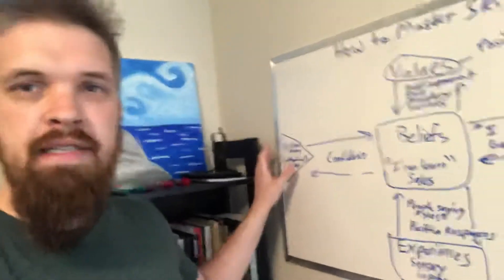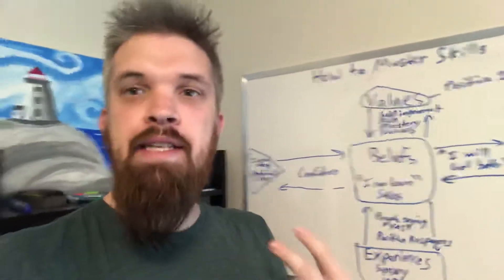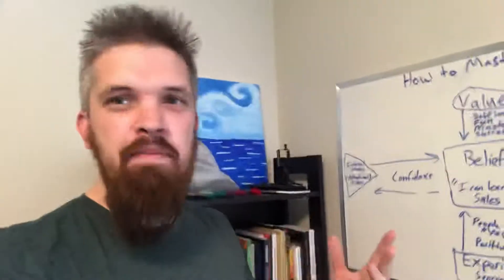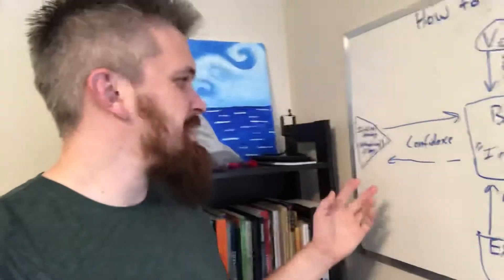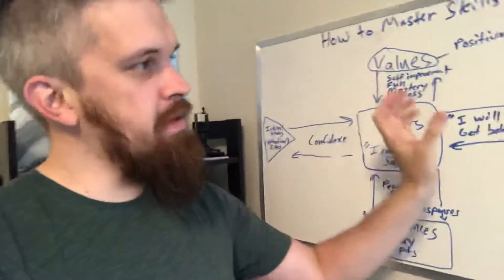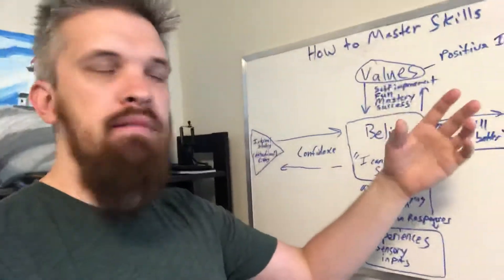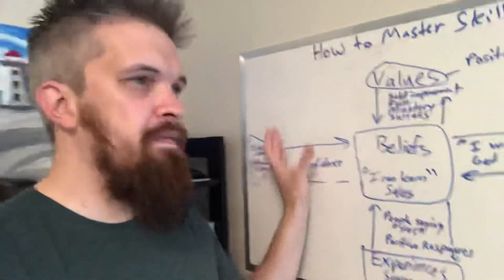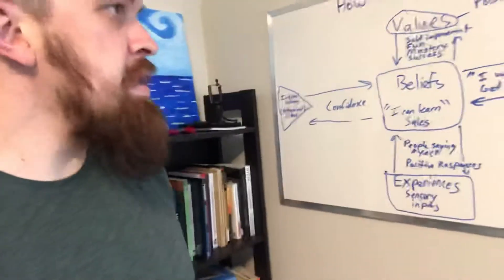But here you have your internal states. And an internal state is your attentional filters. Let's call it NLP. I'm not an NLP master by any means, but I know a bit. So an internal state is confidence. Like most people, they feel like when I get to a certain point, when I start closing 50% of people, then I'll feel confident about my sales ability. But basically, if you want to do it faster, you have to trigger that first.